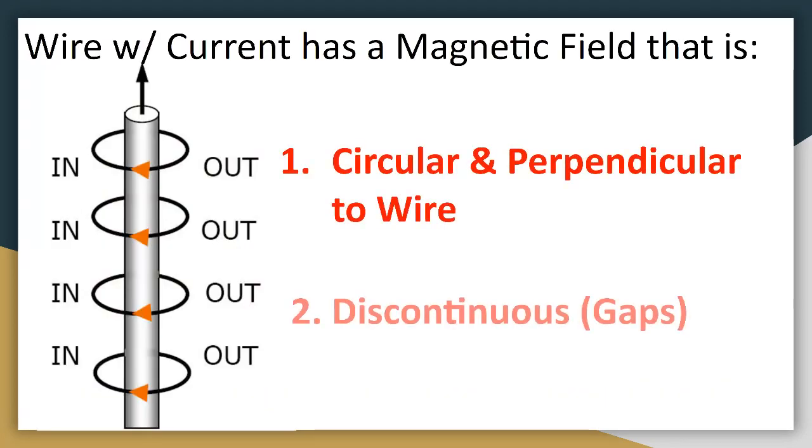As I've said before, the magnetic field around a conductor is circular but it's also perpendicular to the wire and it's discontinuous. This means there are gaps in the field.